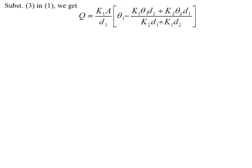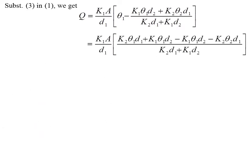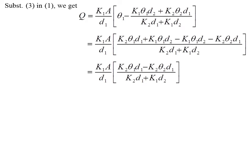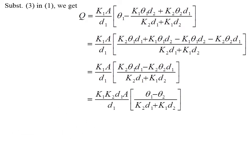Continuing the substitution: theta 2, D1 divided by (K2·D1 plus K1·D2). Simplifying by expanding and rearranging, we arrive at Q equals A times (theta 1 minus theta 2) divided by (D1/K1 plus D2/K2).